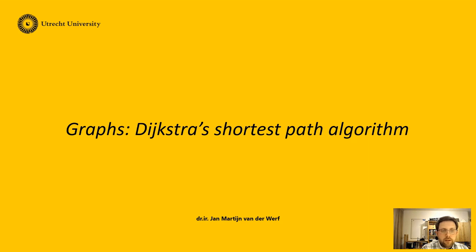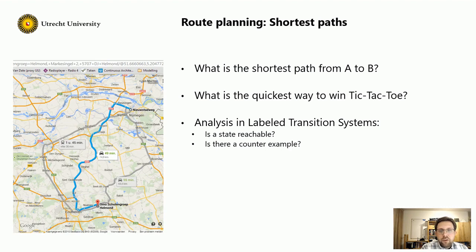In this clip, I want to explain Dijkstra's shortest path algorithm on graphs. Imagine the following situation. We have a map, and we want to move from position A to position B, such as here in Nijmegen where I live, to some zoo in Helmond. What is the shortest path to get there?